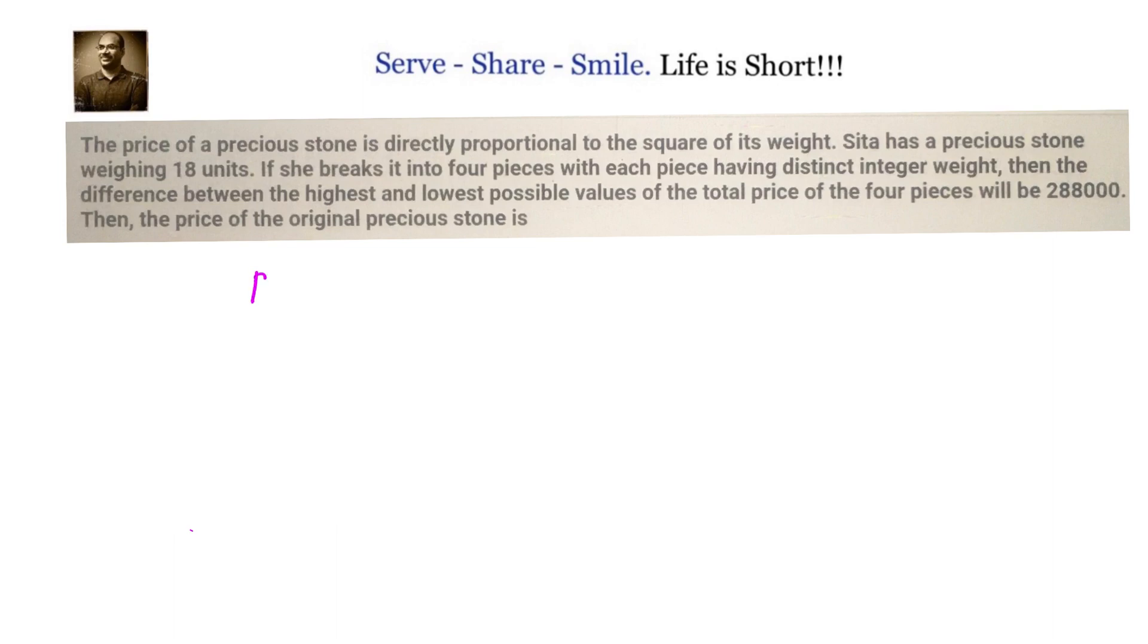The price of a stone is directly proportional to square of its weight. That means P is proportional to W square or we can say P equals to K into W square. Now we have to calculate the value of K to move forward. For that we have been given an extra condition that if this is divided into 4 such that you can have highest possible values for the price or the lowest possible values for the price.